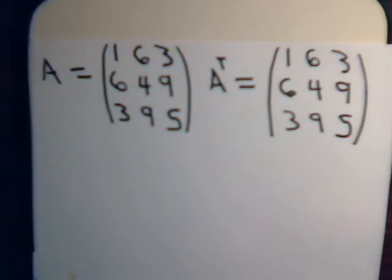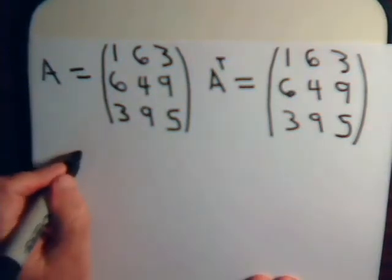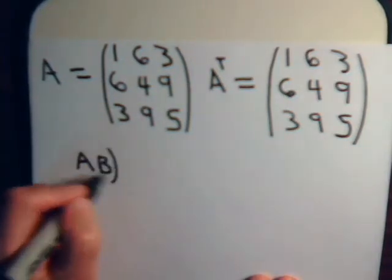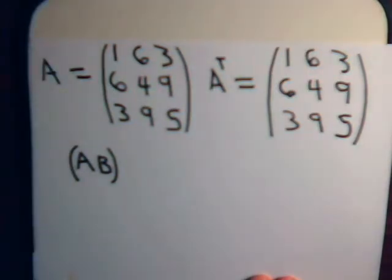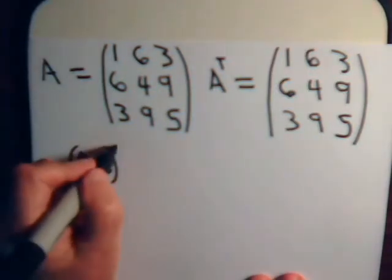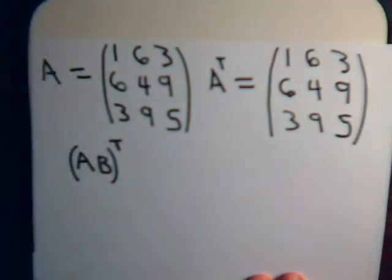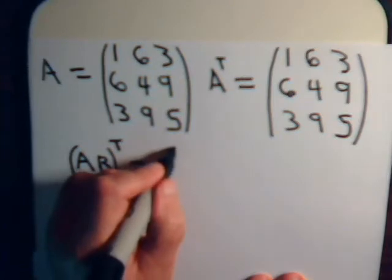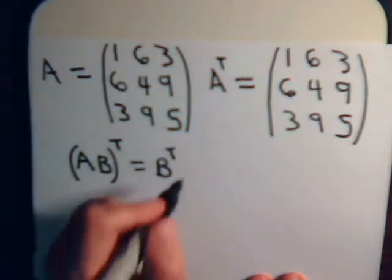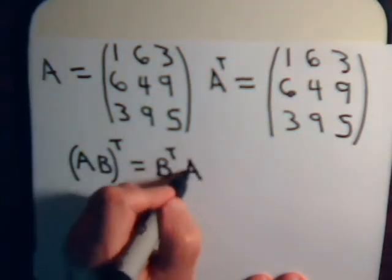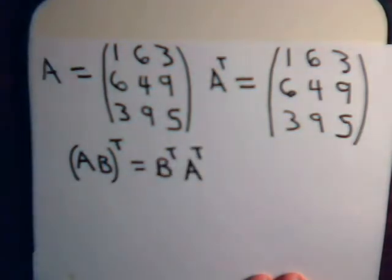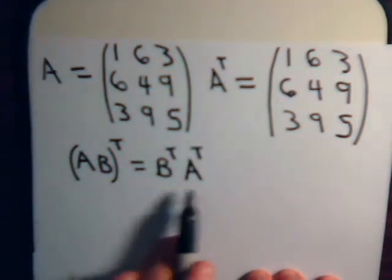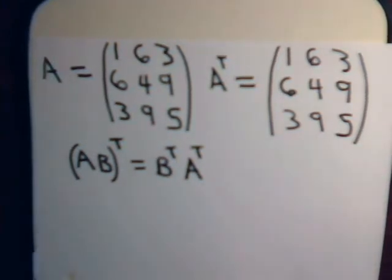Also, remember when you multiply matrices and take the transpose — for example, multiply two matrices together to get a product, then take the transpose of that product — that is equal to the transpose of B times the transpose of A. We'll use this fact in our video.